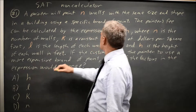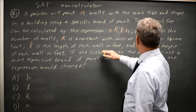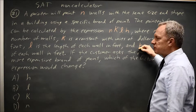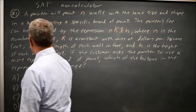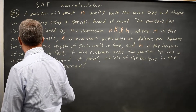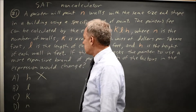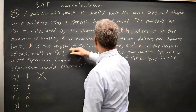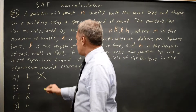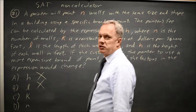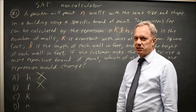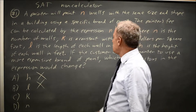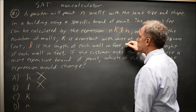H is the height of each wall in feet. Using a different paint will not change the height of your walls, so choice A is wrong. Choice B, L is the length of each wall in feet. Changing your brand of paint will not change the length of the walls in the building, so that is not correct.